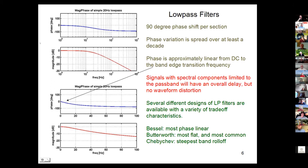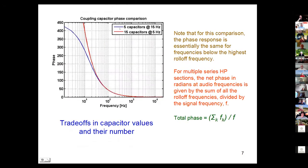Let's look at what happens when we have five capacitors at 15 hertz set serially through different parts of the audio system, or compare that with 15 capacitors set at 5 hertz. Because the phase is f0 divided by f, those two should be about the same.